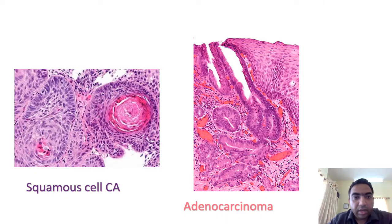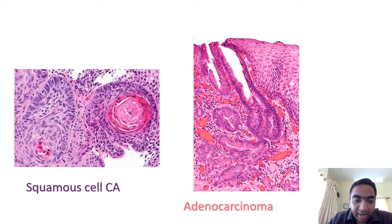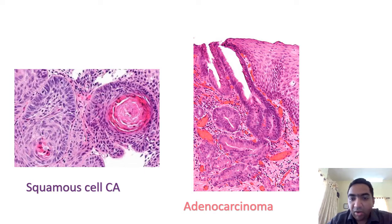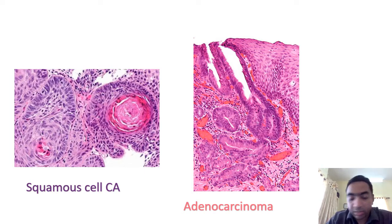After performing barium swallow and endoscopic biopsy, the pathologist will identify either squamous cell carcinoma or adenocarcinoma from the biopsy specimen.